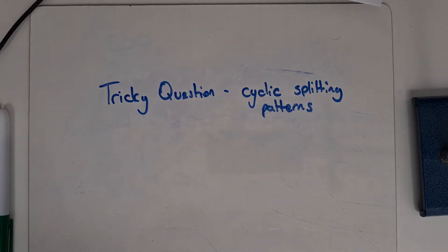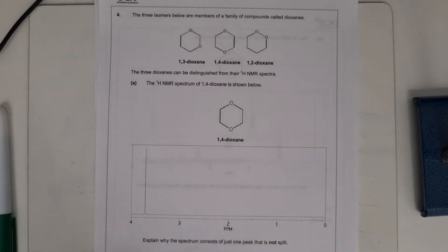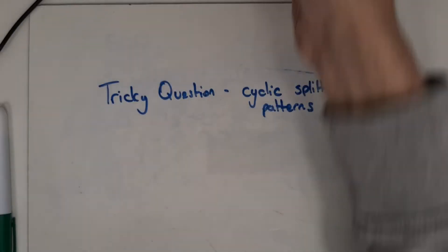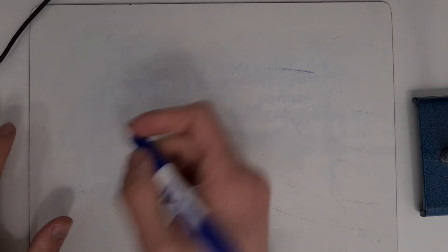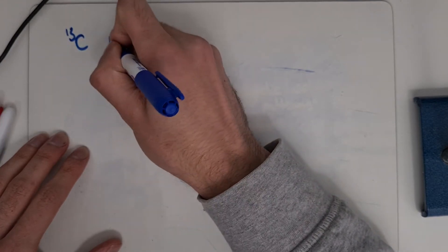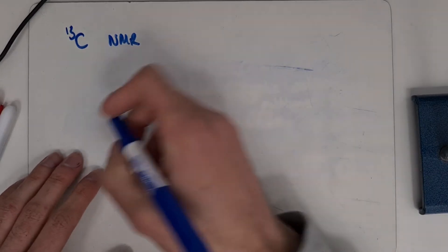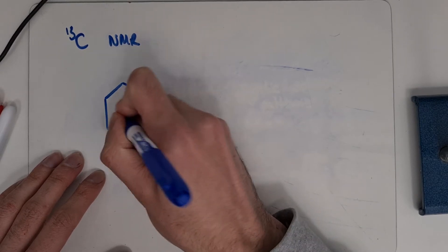In this video I'm going to look at cyclic splitting patterns and go through question four from the OCR practice booklet. It's extremely difficult to look at the splitting pattern of aromatics and cyclic compounds, though cyclic is a bit easier than aromatic. We'll start with carbon NMR — not necessarily splitting, but we'll look at the different environments when we've got a benzene ring with two bonds attached.